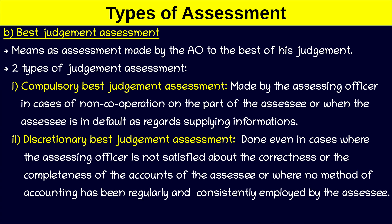Why is it called compulsory best judgment assessment? It is made by the assessing officer in cases of non-cooperation on the part of the assessee, or when the assessee is in default. In such cases, the assessing officer is compelled to make the assessment.